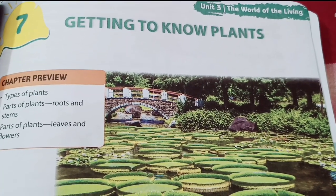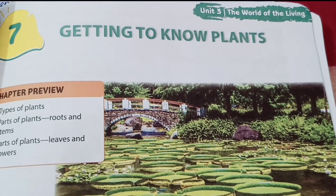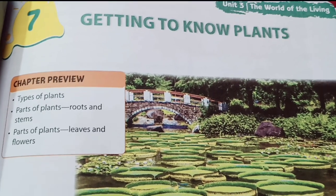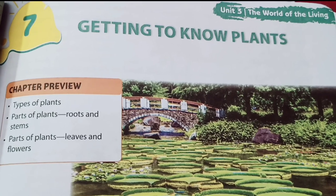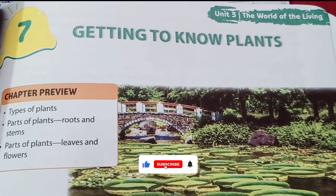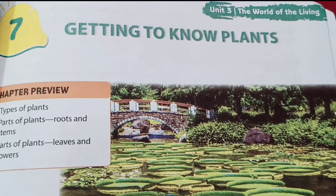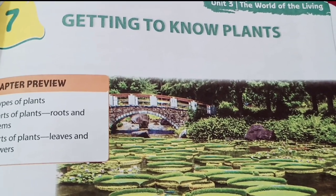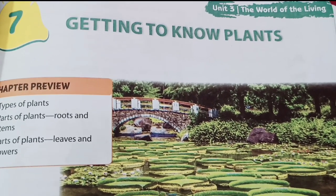Hello students, welcome to West Bengal English Medium Guide. Today I am going to provide you the question answers from Chapter 7, Class 6: Getting to Know the Plant. This is from West Bengal Board English Medium. Before we start, requesting you to like the video, subscribe the channel and press the bell icon. If you have any queries, please let me know in the comment box, and if you have missed any video, check out the description box or playlist.